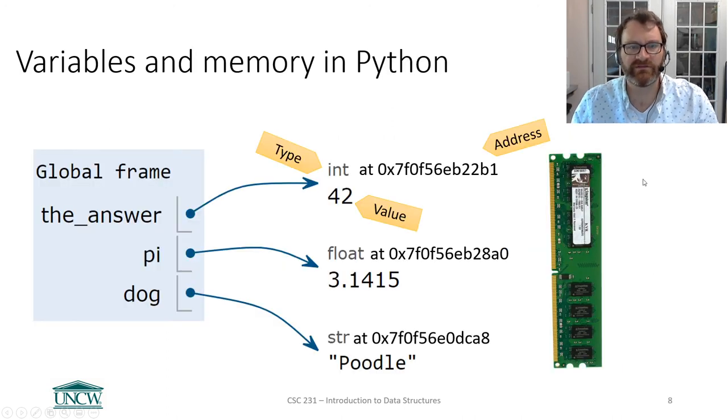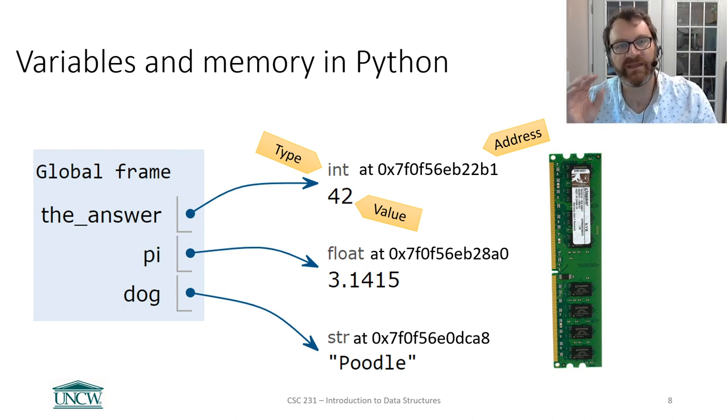So let's look at it a slightly different way. Here's my variables. These are variables. They are just names. That's all that variables are. They're names. They're bookmarks. They point to a place. But they are not the value themselves. The value lives in memory.